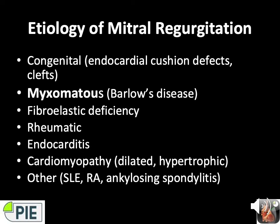The etiology of MR is varied and includes congenital abnormalities such as endocardial cushion defects or clefts, myxomatous degeneration synonymous with Barlow's disease characterized by redundant thick hammock-like leaflets, fibroelastic deficiency with thin leaflets and chordae, rheumatic disease, endocarditis, cardiomyopathy, and others such as SLE, rheumatoid, and ankylosing spondylitis. Degenerative MR is the most common, classically Barlow's, FED, or Marfan's.